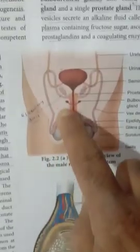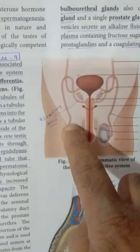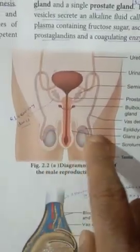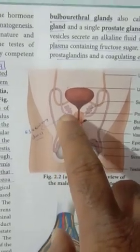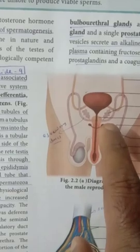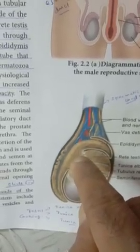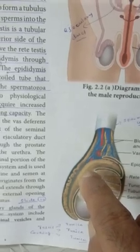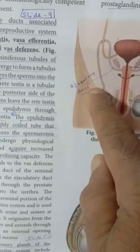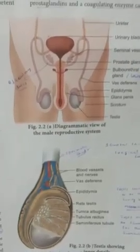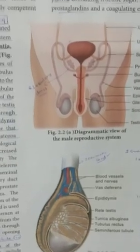The semen is ejaculated out through the urethra. In the seminal vesicle, prostate gland, and Cowper's gland, secretions are added to the sperm. This is the basic structure and function of the male reproductive organ. Thanks a lot for hearing. Thank you.